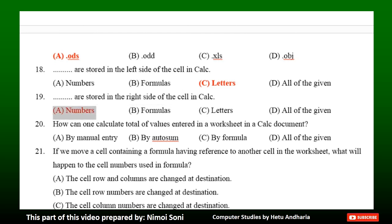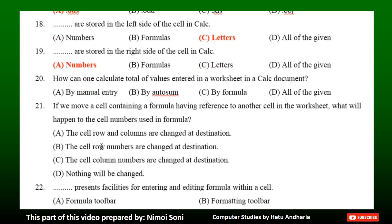Question 20: How can one calculate the total of values entered in a worksheet in a CALC document? Option A: By manual entry. Option B: By auto sum. Option C: By formula. Option D: All of the given. The correct answer is Option D — All of the given.